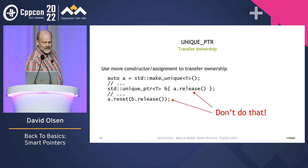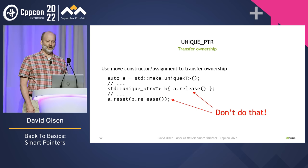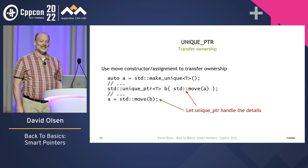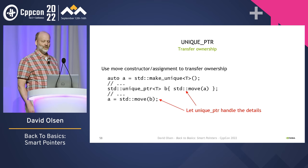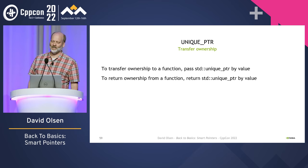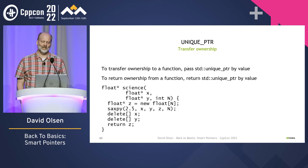When transferring ownership from one unique_ptr to another, use the move constructor or the move assignment operator. Don't ever call release on one unique_ptr and then pass that raw pointer to another one — I think this code would work but it's such bad form that I would absolutely reject this in a code review. Do it this way instead: let unique_ptr handle all the details. This code better communicates your intent that you are transferring ownership from one unique_ptr to another. When transferring ownership into or out of a function, pass a unique_ptr by value or return it by value.